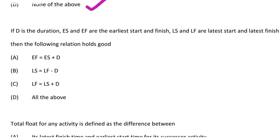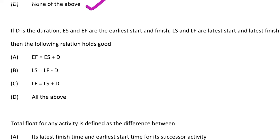Next question: if D is the duration, ES and EF are the early start and finish, LS and LF are the latest start and finish time, then which relation holds good — option A EF = ES + D, option B LS = LF − D, option C LF = LS + D, option D all the above. The correct answer is option D, all the above.